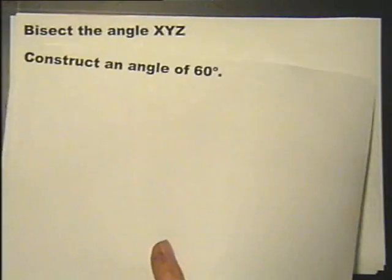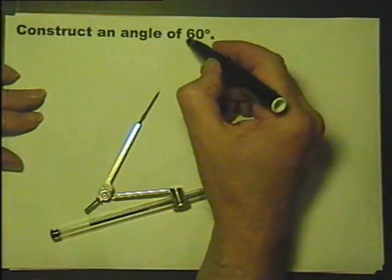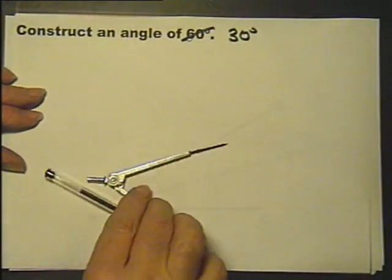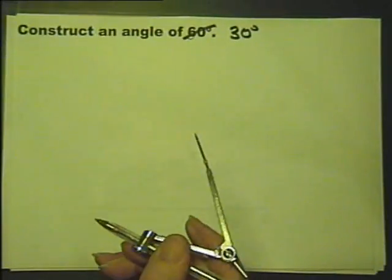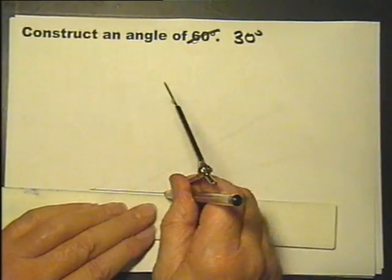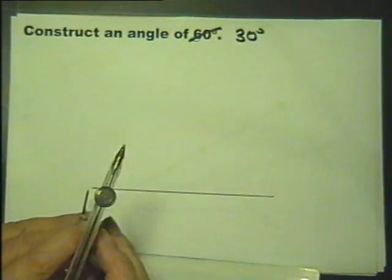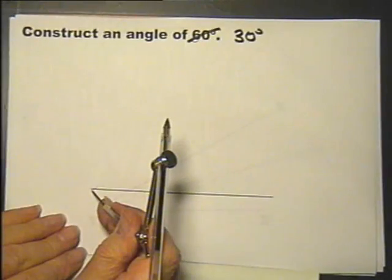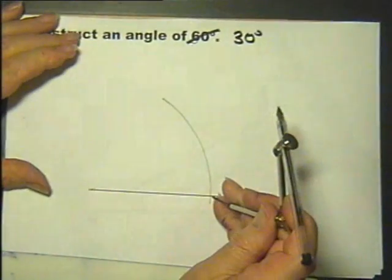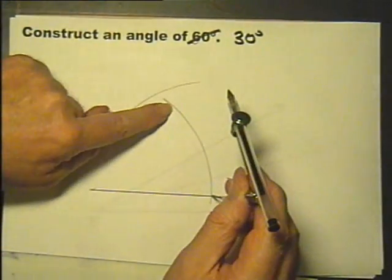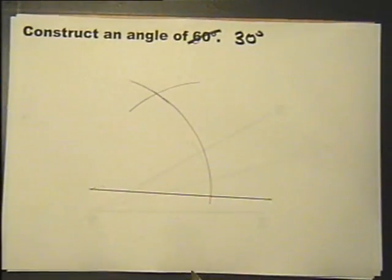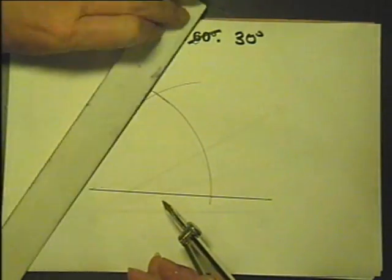And to finish with, construct an angle of 30 degrees. First off you construct an angle of 60 degrees. So just draw a line somewhere, any radius, in there and then up there. Didn't make it long enough did I? Although it's any radius, it's got to be long enough. So therefore that is the 60 degrees we saw earlier.